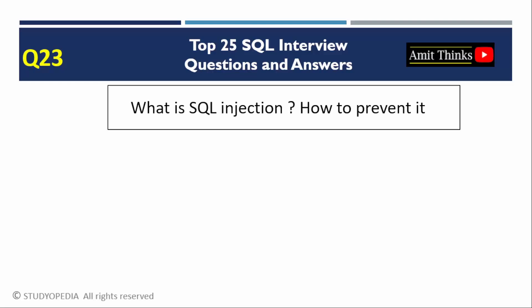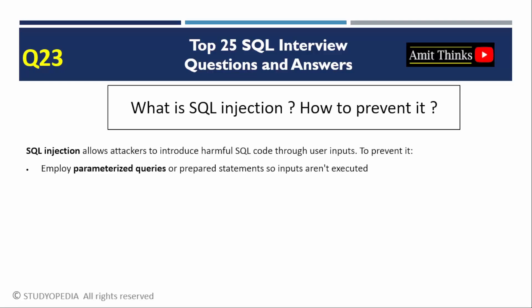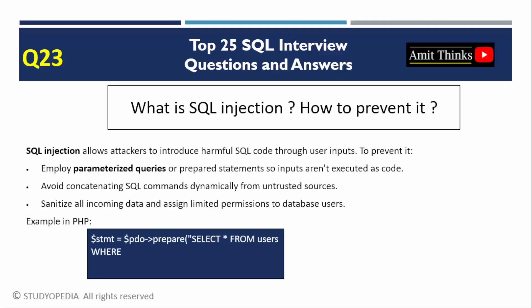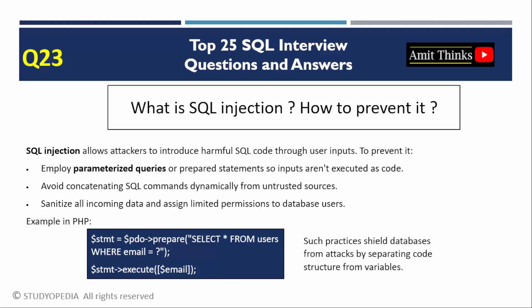Question 23: What is SQL injection and how to prevent it? SQL injection is a security vulnerability where malicious SQL is injected via input fields. Prevention methods include using parameterized queries to separate code from data, avoiding dynamic SQL concatenation, sanitizing inputs, and enforcing least privilege access. Here is a quick example in PHP to avoid SQL injection using PHP Data Objects (PDO), which safely queries a database for a user based on their email address, ensuring inputs are treated as data not executable code.